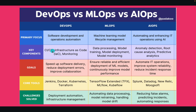What are the key components? In DevOps you have CI/CD, infrastructure as code like Terraform, and monitoring. In MLOps you are dealing with data processing, model training, model deployment, and model monitoring. In AIOps it's anomaly detection, root cause analysis, and predictive analysis. The goals for DevOps are to speed up software delivery, reduce deployment errors, and improve collaboration. For MLOps, the goal is to ensure reliable and efficient deployment of ML models and continuously improve model performance. For AIOps, the goals are to automate IT operations, improve system reliability, and reduce incident response time.